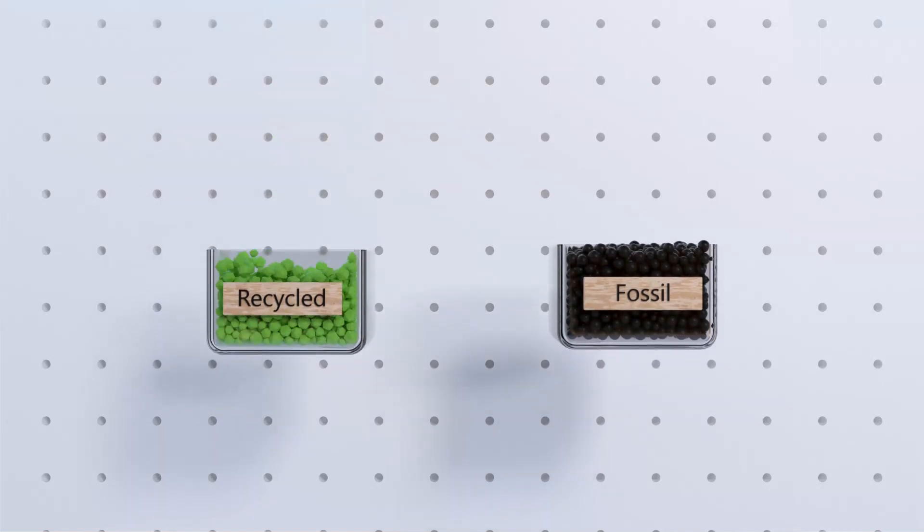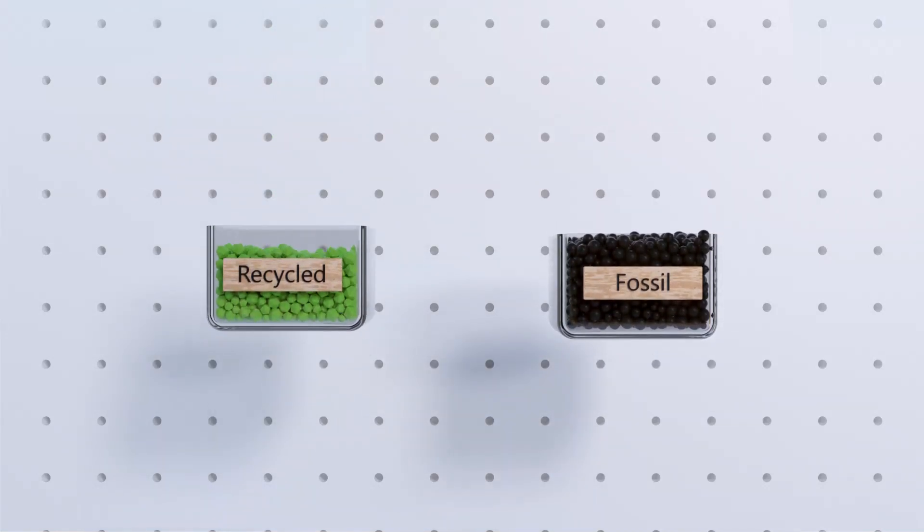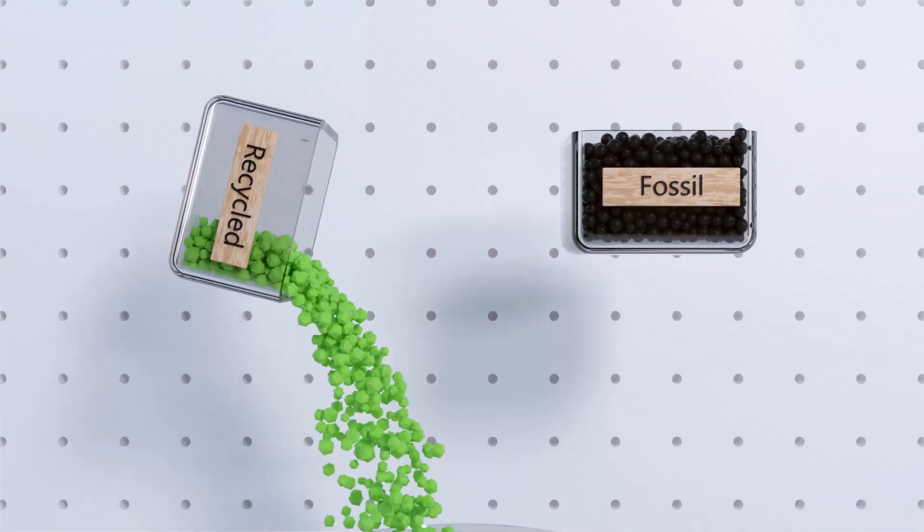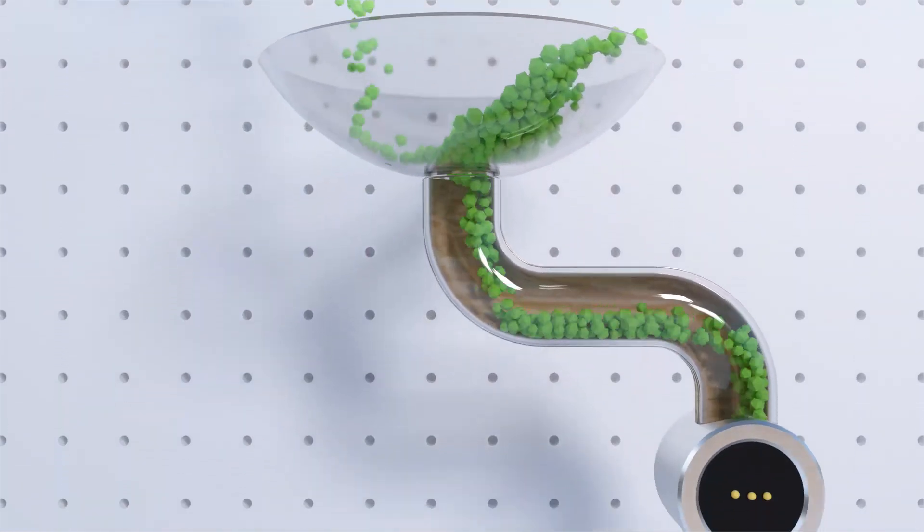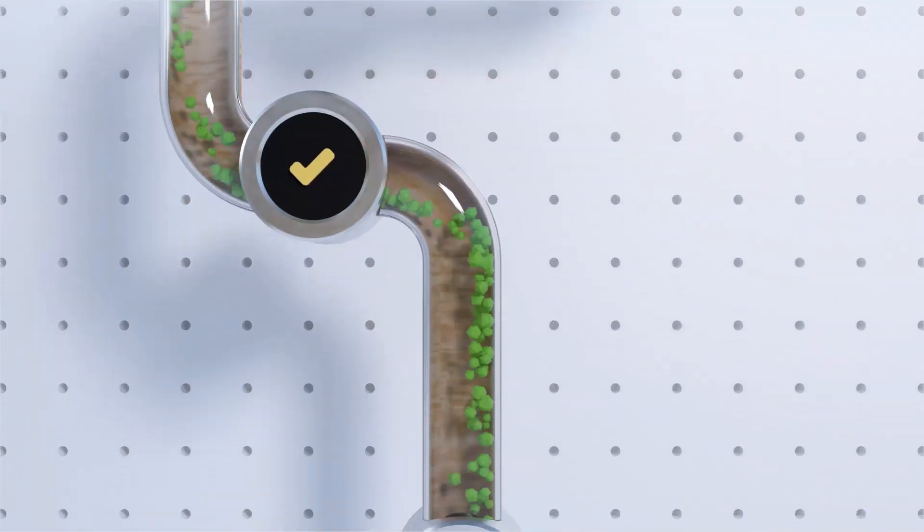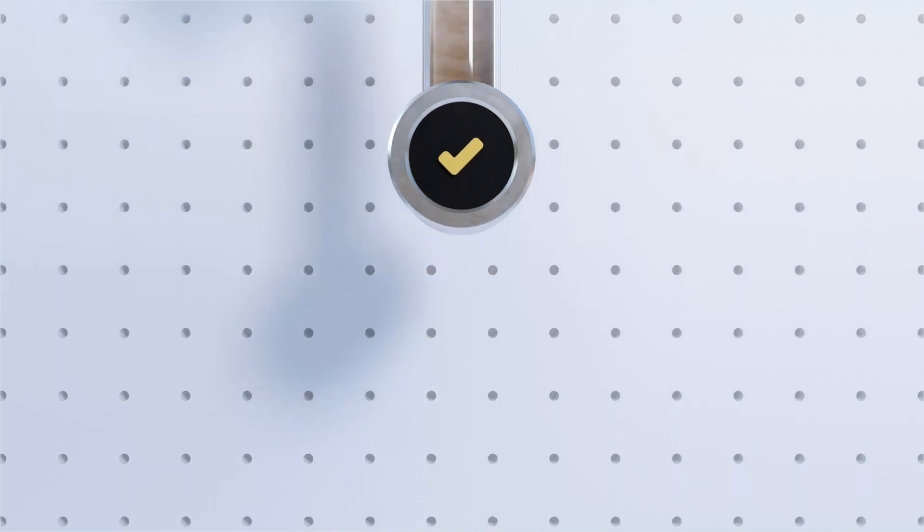The mass balance approach ensures the gradual replacement of fossil materials with recyclable materials in any supply chain without disruption. This allows companies to verify renewables throughout their supply chain without needing to build extra infrastructure or employ new processes.